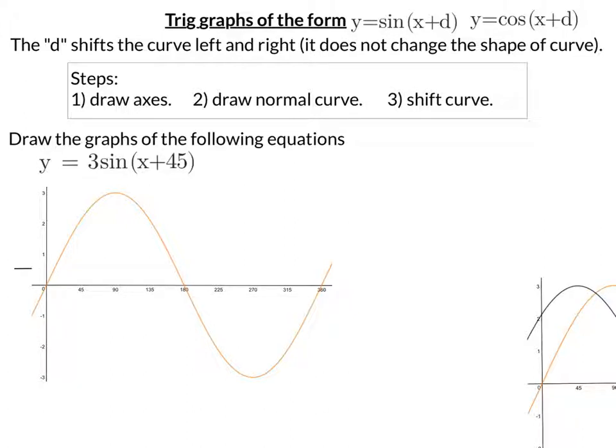Now, plus 45. Well, that means every point is going to move to the left by 45 degrees. So, if I just get a pen here. While its maximum is normally at 90, that's now going to be at 45.